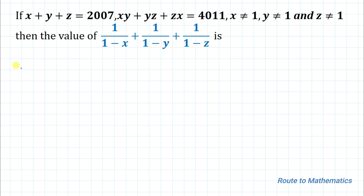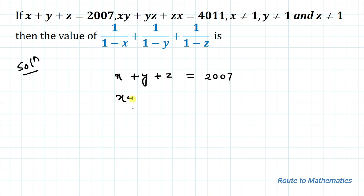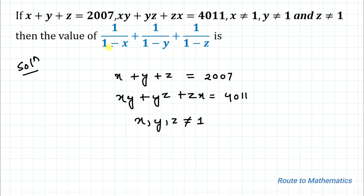Without any delay, let's start the solution. We have given x plus y plus z equals 2007 as our first equation, and the second equation is xy plus yz plus zx equals 4011, and we're given that x, y, and z are not equal to 1.